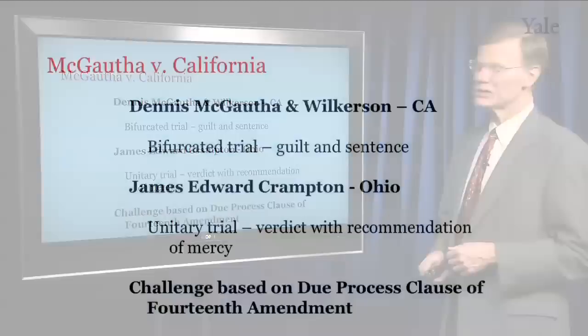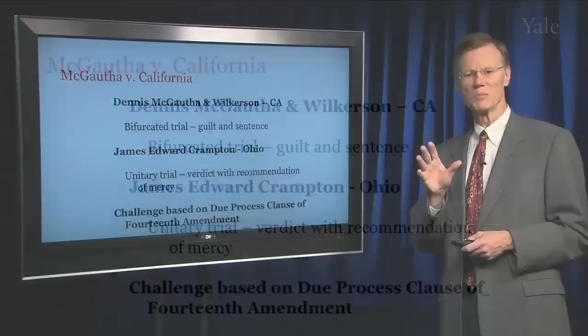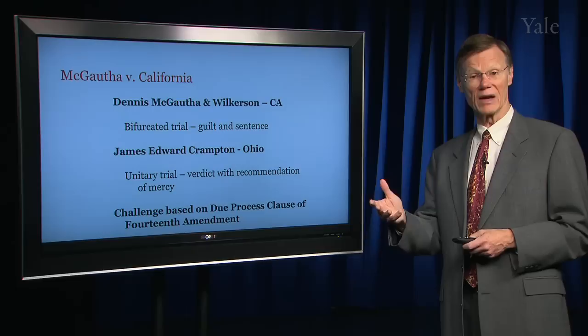The first case is McGautha v. California. Magatha himself and a fellow named Wilkerson were appealing a death sentence out of California, and James Edward Crampton was appealing his death sentence out of Ohio. The California case involved a bifurcated trial — one trial on guilt or innocence and one on punishment. The Crampton case from Ohio had the standard practice: one trial where the jury decided both guilt and punishment.